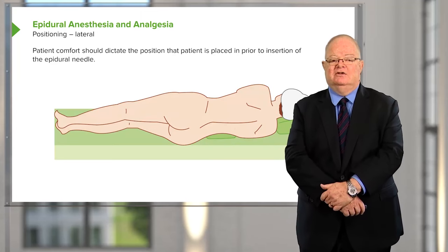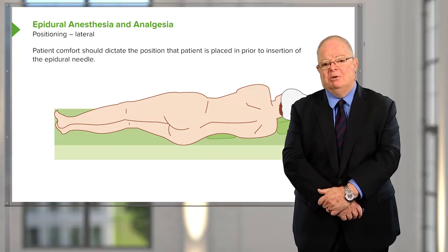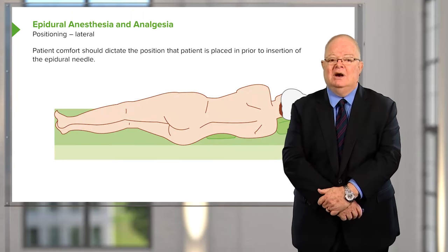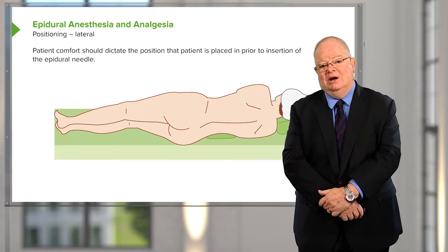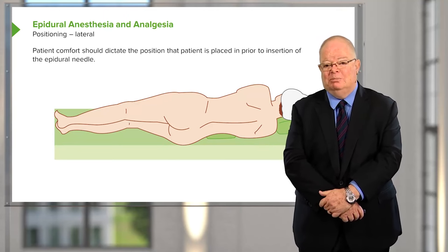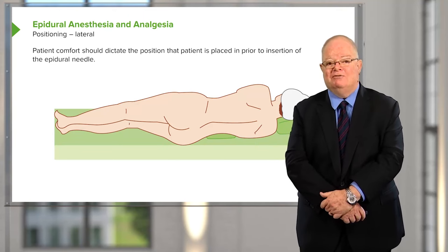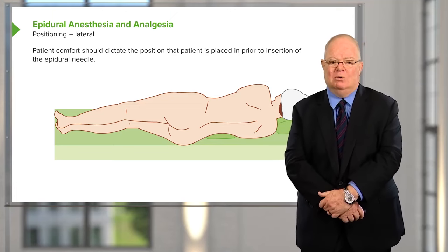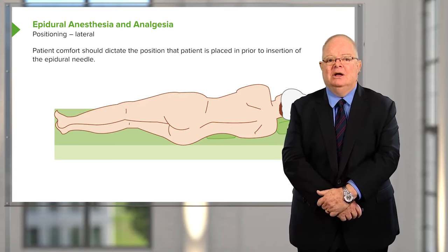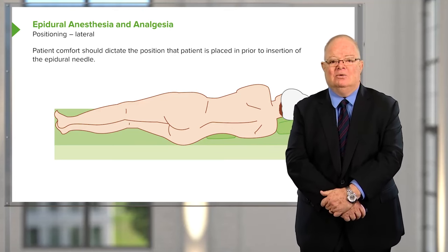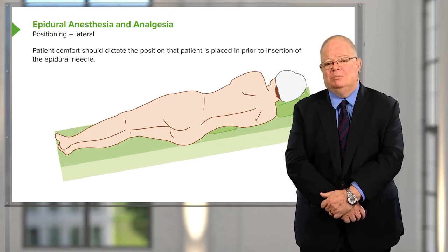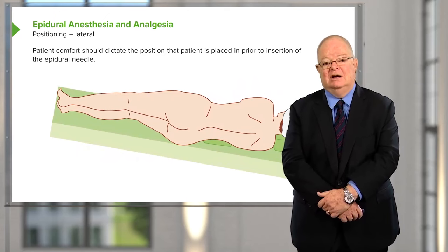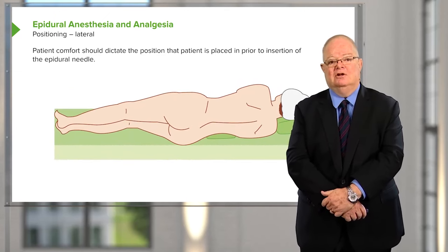You don't have to have the patient sitting to place an epidural. Frequently women in labor find it more comfortable to be on their side, so one must learn to place the epidural with the patient in the lateral position — either left or right lateral. It's unusual to place the patient head up or down, but sometimes patients request this and it is certainly possible.